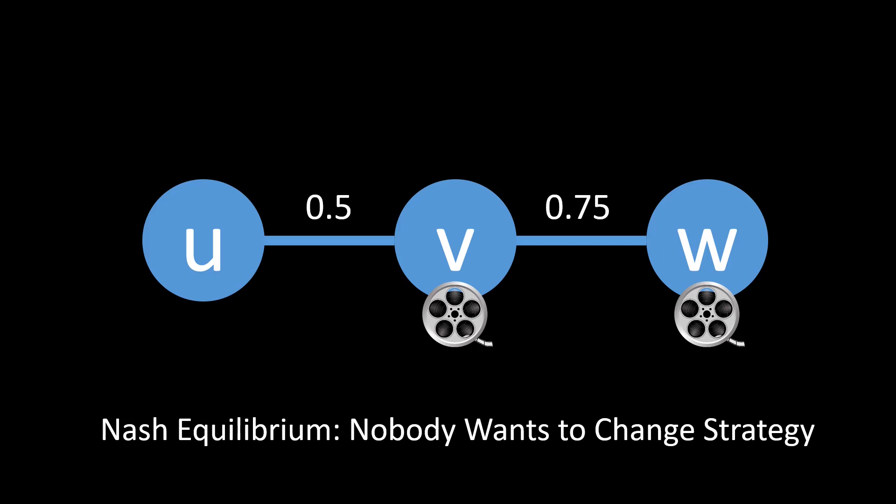We can sometimes find a Nash equilibrium if we start in some random situation, and then change the strategy of some nodes which are unhappy until all nodes are happy with their current strategy. If only node v caches the movie, we have a Nash equilibrium. Nodes u and w would both not change their strategy because they can get the movie from v for less than cost 1. And node v also cannot unilaterally change its strategy — if node v did not cache the movie, nobody else would, and the cost of the nearest cache would be infinite for node v. So v rather keeps the movie cached.